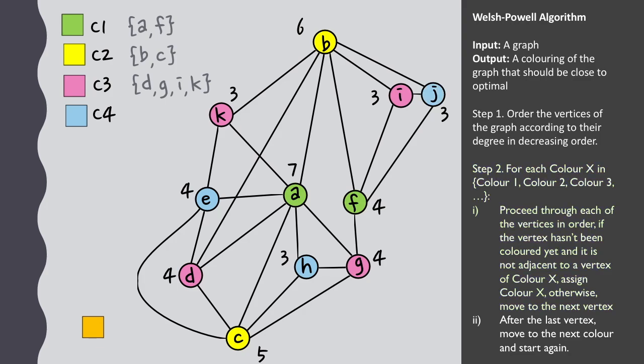At this stage we have our graph coloring, and our estimate of the chromatic number is the number of colors we used.